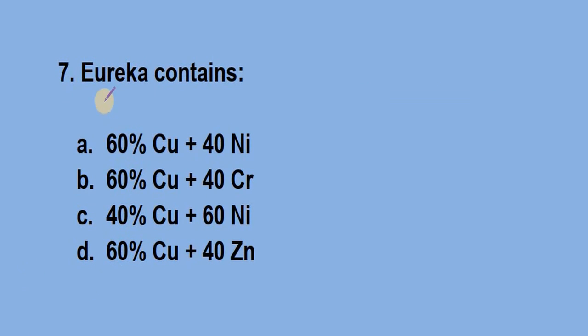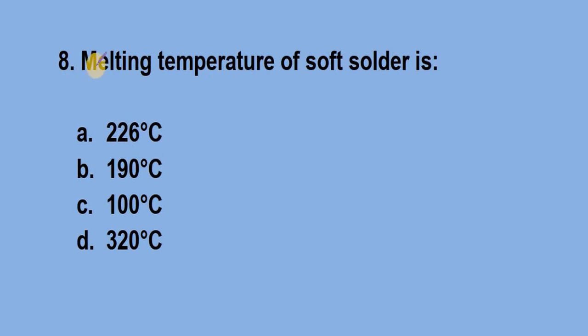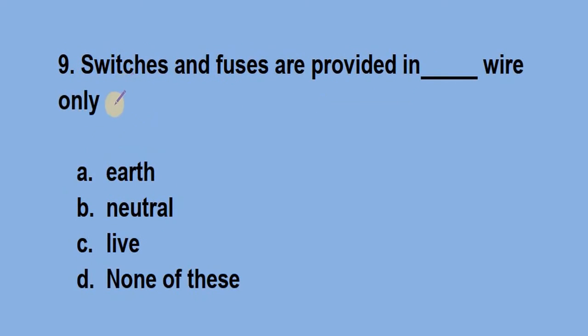Question number 7, Eureka contains. Answer is option A, 60% copper and 40% nickel. Question number 8, melting temperature of soft solder is? Answer is option B, 190 degree Celsius. Question number 9, switches and fuses are provided in blank wire only. Answer is option C, live wire.